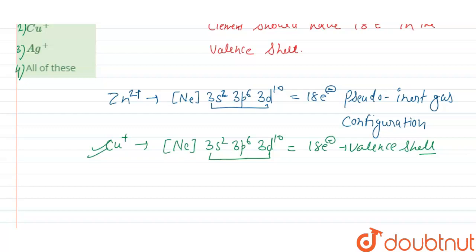In the third option, Ag+, the electronic configuration can be written as [Ar] 3d10 4s2 4p6 4d10. So this is the electronic configuration of Ag+ ions. Here the fourth shell is the valence shell for Ag+ and it contains 18 electrons, so it also shows pseudo inert gas configuration.